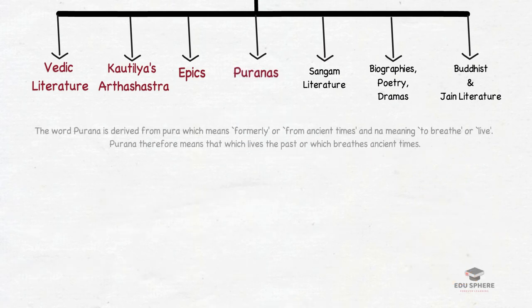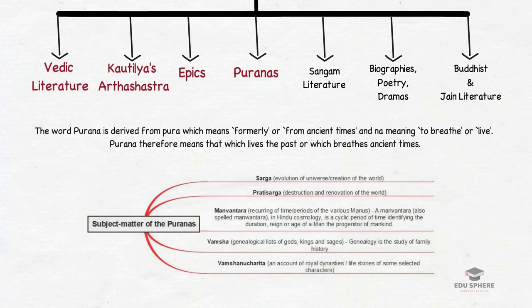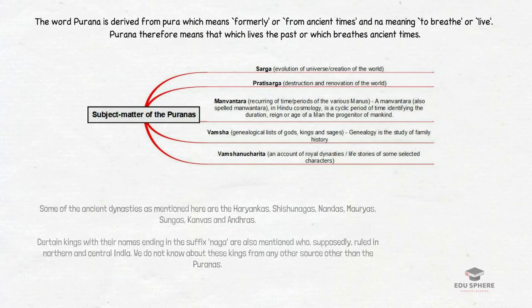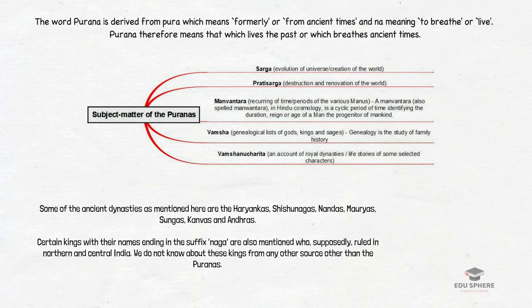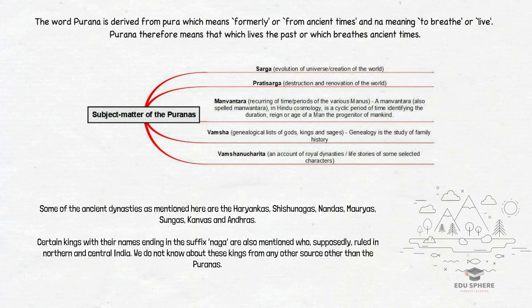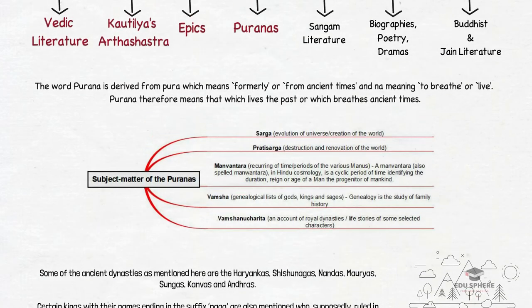Next are the Puranas. Puranas means belonging to ancient or older times — it is the name of an ancient Indian genre of Hindu or Jain literature. They primarily are post-Vedic texts containing a narrative of history of the universe from creation to destruction, genealogies of kings, heroes and demigods, and descriptions of Hindu cosmology, philosophy and geography. Some ancient dynasties mentioned in the Puranas include the Haranyakas, Shishunagas, Nandas, Mauryas and Sungas. There are also certain kings with names ending in the suffix 'Naga' who ruled in northern and central India, known only from the Puranas. Some geographical information on rivers, lakes and mountains is also found in the Puranas, making them crucial for reconstructing the historical geography of ancient India.